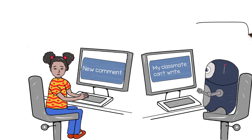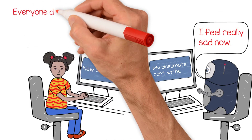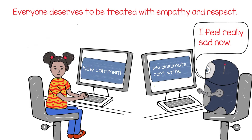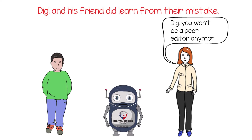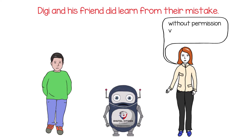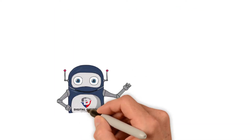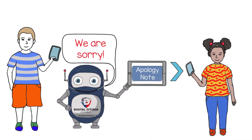If Digi hadn't seen his classmate cry, he might not have realized how upset she was. To show empathy online, you have to think about how you would feel if you were on the other side of the screen. Everyone deserves to be treated with empathy and respect. Digi and his friend did learn from their mistake. Digi ended up losing his job as a peer editor, because sharing someone's work with another person without permission violates that person's privacy. Digi's friend had recess taken away for a week due to his actions.